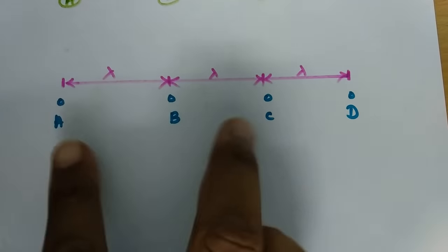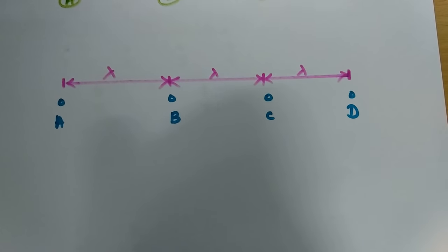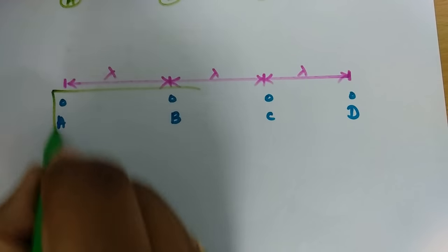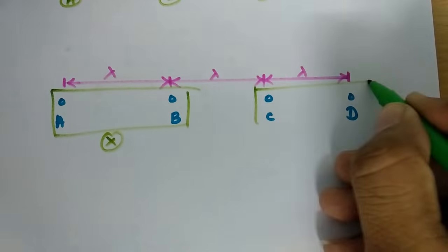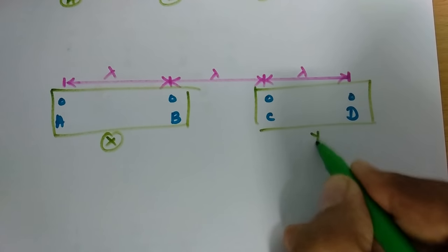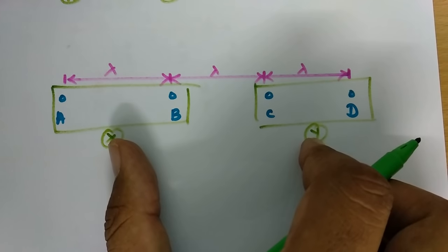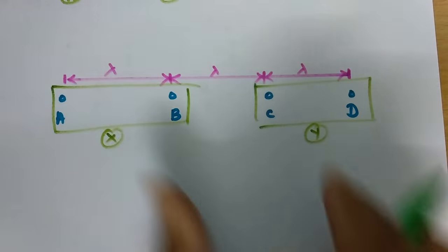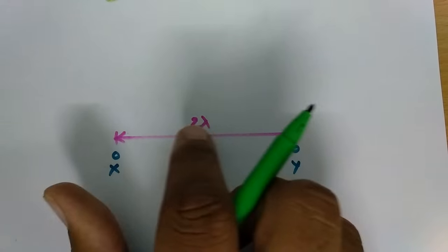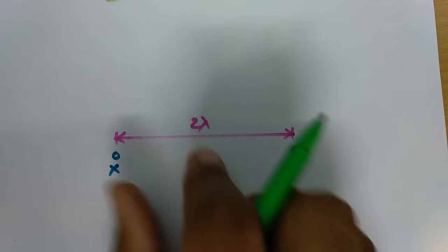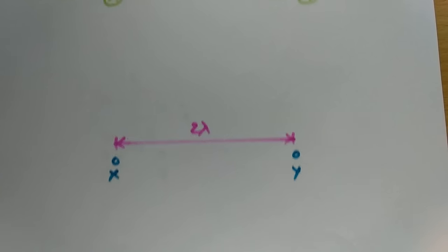I have shown it here by this diagram. Then again I will repeat this process. I will consider group of A and B as X and group of C and D as Y. If you see now the spacing between X and Y, that will change to 2 lambda. So X and Y are separated by distance 2 lambda. Then I will have a resultant pattern.